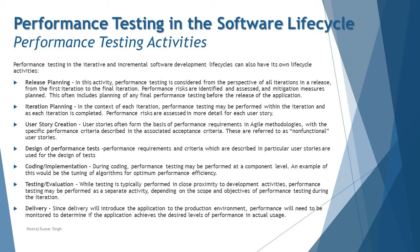When it comes to user story creation, user stories often form the basis of performance requirements in agile, with specific performance criteria described in the associated acceptance criteria. User story descriptions should include the performance contribution, with a clear set of performance expectations in the acceptance criteria. Performance requirements and criteria described in user stories are then used for designing the performance tests.